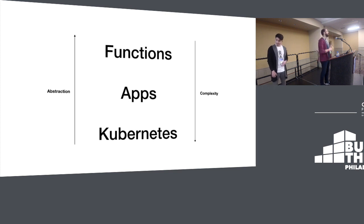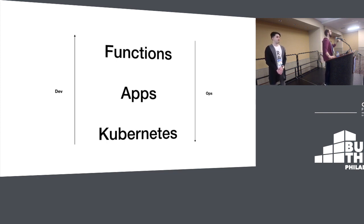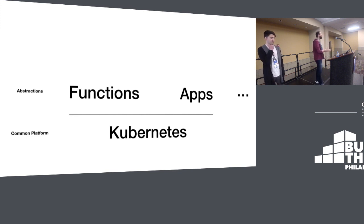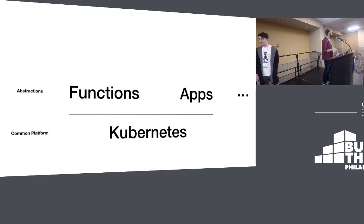You can think of a gradation of abstraction as you move up: containers at the bottom, moving up towards functions. As you go up, you do more and more dev, less and less ops - you focus more on your problems, less on operating your problems. The advantage of Kubernetes - now we have this dial tone at the bottom - is you can have multiple abstractions, all interacting, all interoperating on top of that framework, which means you can use the right tool for each part of the problem.